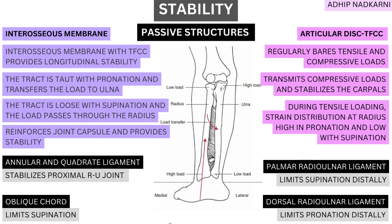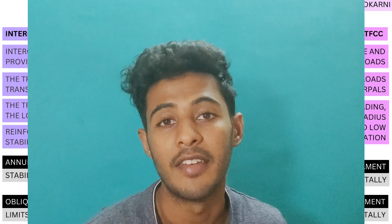With that, we finish this topic. We saw how the interosseous membrane and TFCC together create longitudinal stability, along with ligaments and muscles which create transverse stability at the radio-ulnar joint. That covers kinetics Part 2 of the radio-ulnar joint. In future videos, I'll cover other topics under the radio-ulnar joint, so stay tuned — thank you for watching.